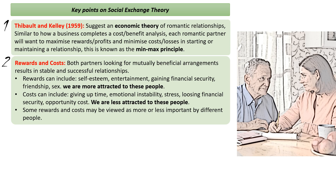One way social exchange theory is quite flexible is that it adapts to the idea that people have different rewards and costs. Some people might see financial security as more important than others; some might value friendship more. Each individual considers rewards and costs in their own situation, but it ultimately comes down to this calculation.